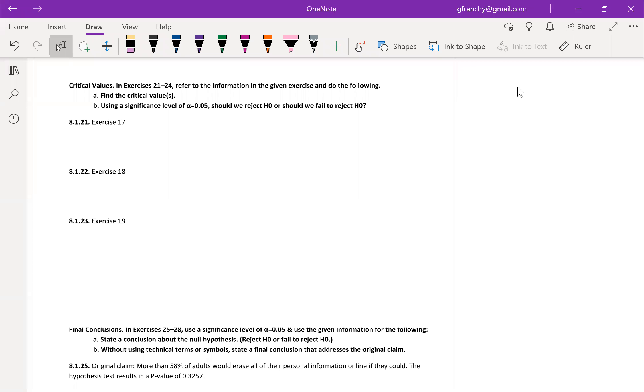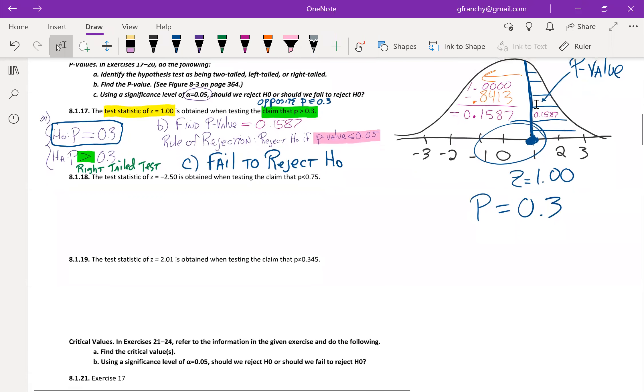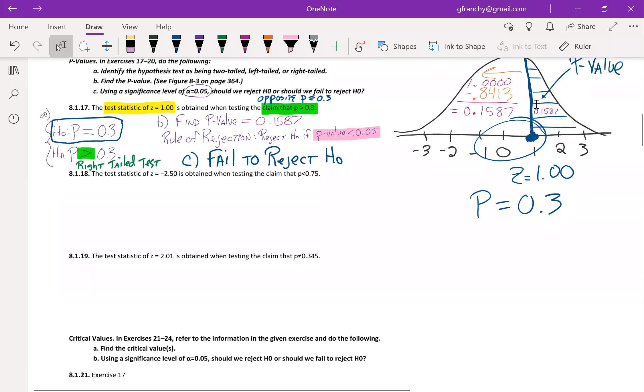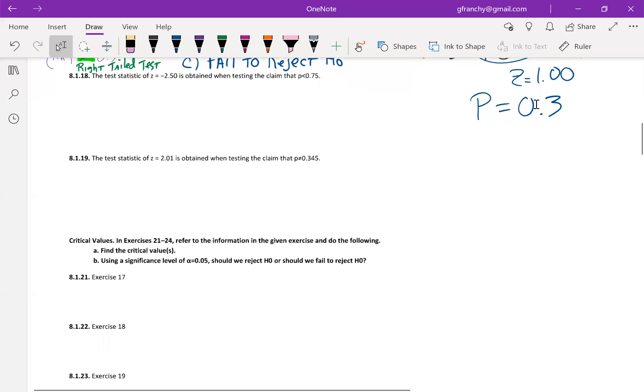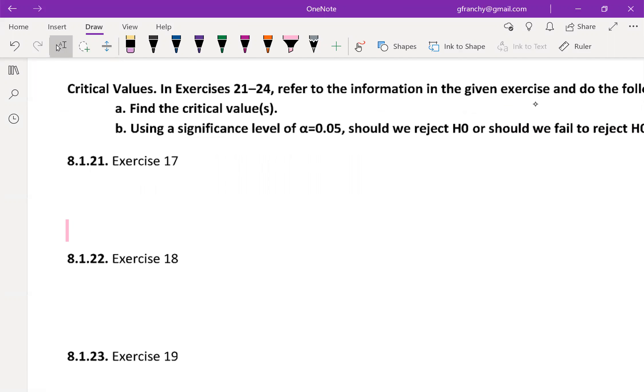We move on to the next section for finding critical values. We look at question 21, and question 21 refers us back to question 17. So, in question 17, we have a right tail test with an alpha of 0.05, and what it means to find the critical value is,